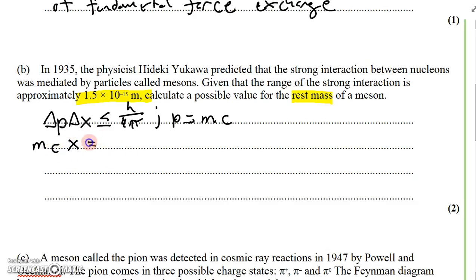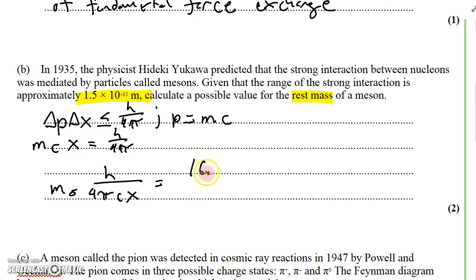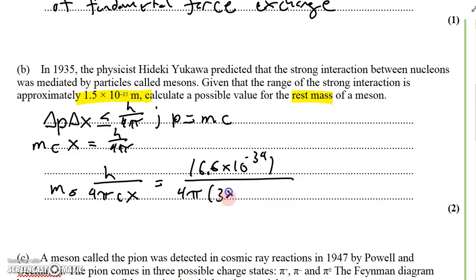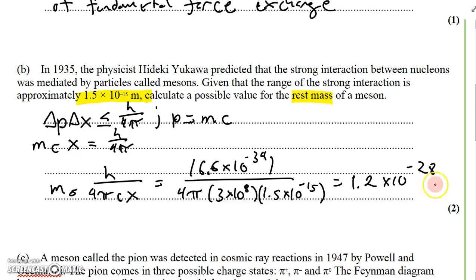We'll simplify and call it m×c×x, and we'll say that it's equal to h/4π to give us a maximum value for that rest mass. Solving for the rest mass, we get h/(4π × c × x). We know all of those things: 6.6 × 10⁻³⁴ divided by 4π times the speed of light times the position restriction, 1.5 × 10⁻¹⁵. If you punch that into your calculator, you should get 1.2 × 10⁻²⁸ kilograms for the rest mass, to two significant figures.